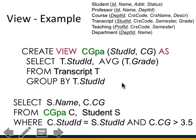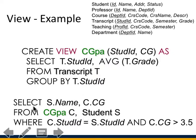Yet another example using the schema from last class — we create a view that pulls some information from the transcript table, giving us two attributes: average grade and student ID. The view is color-coded to show that you can use a view with any other table — you can join them, use union, except, minus, whatever. This view is treated just like any other table. The query below selects student name and cumulative GPA from this view joined with the student table.